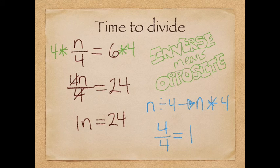And think about it, we can check, is 24 divided by four six? Yes, 24 divided by four is six, because six times four is 24. Now, I turn my four fourths into one.